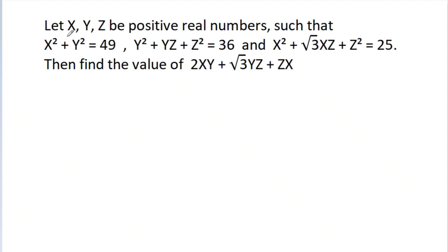In this video, we have given that x, y, g are positive real numbers such that x² + y² = 49, y² + yg + g² = 36, and x² + √3·xg + g² = 25. We have to find the value of 2xy + √3·yg + gx.